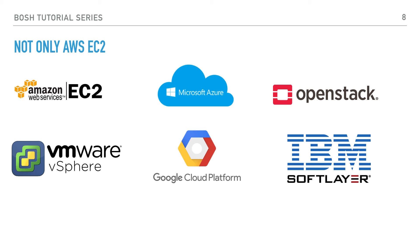In our previous example, we mentioned that we want to create the VMs on Amazon EC2. It's important to note that one of BOSH's key capabilities is the ability to run your software not only on Amazon EC2, but also on VMware vSphere, Google GCP, OpenStack, Microsoft Azure, and IBM SoftLayer — with no required changes to your packaged software. This is a powerful concept with BOSH that we're going to visit later in this series.